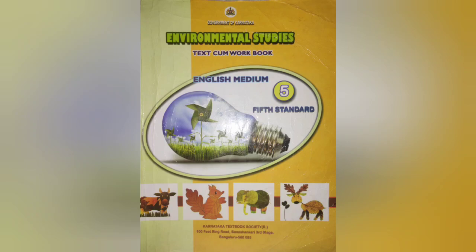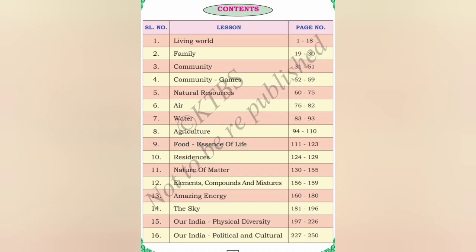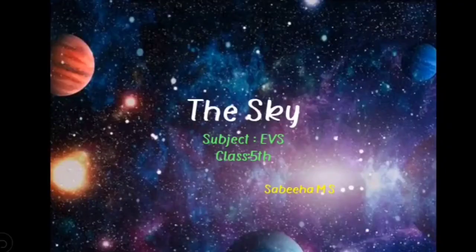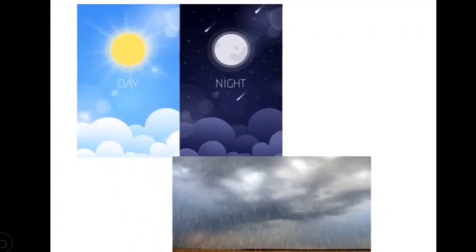Hi, hello children! Welcome back to my class. Today we are going to start a lesson from EVS of fifth standard — that is 'The Sky.' You have all seen the sky during daytime and nighttime. During the daytime you observe the sun and clouds, and during the nighttime you observe the moon, stars, and sometimes shooting stars.